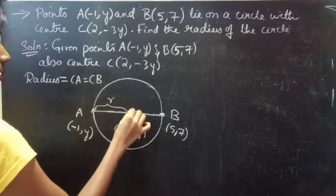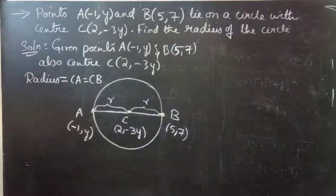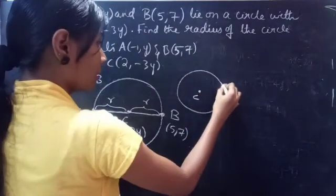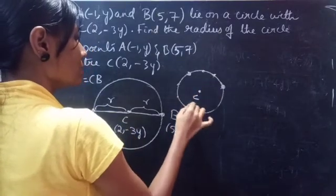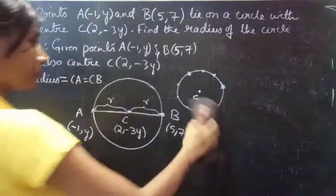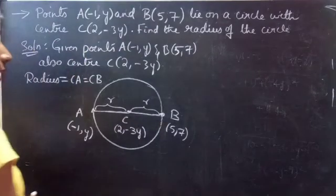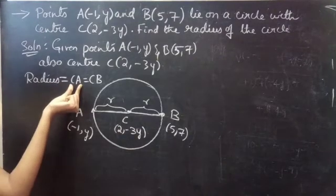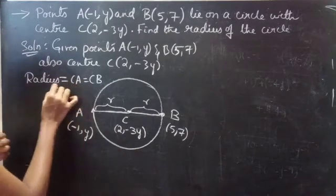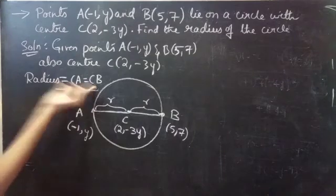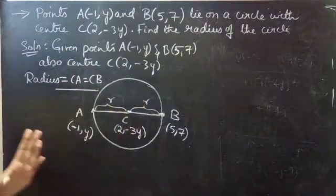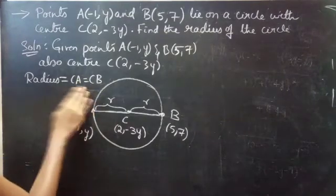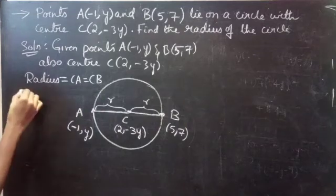These are the radius. If this is a center, then any point on the circle is equidistant from C, and the distance between the center and that point will be the radius. Now we need to find the distances CA and CB. Since we have the condition that CA equals CB, using this condition we are going to find the unknown value y.